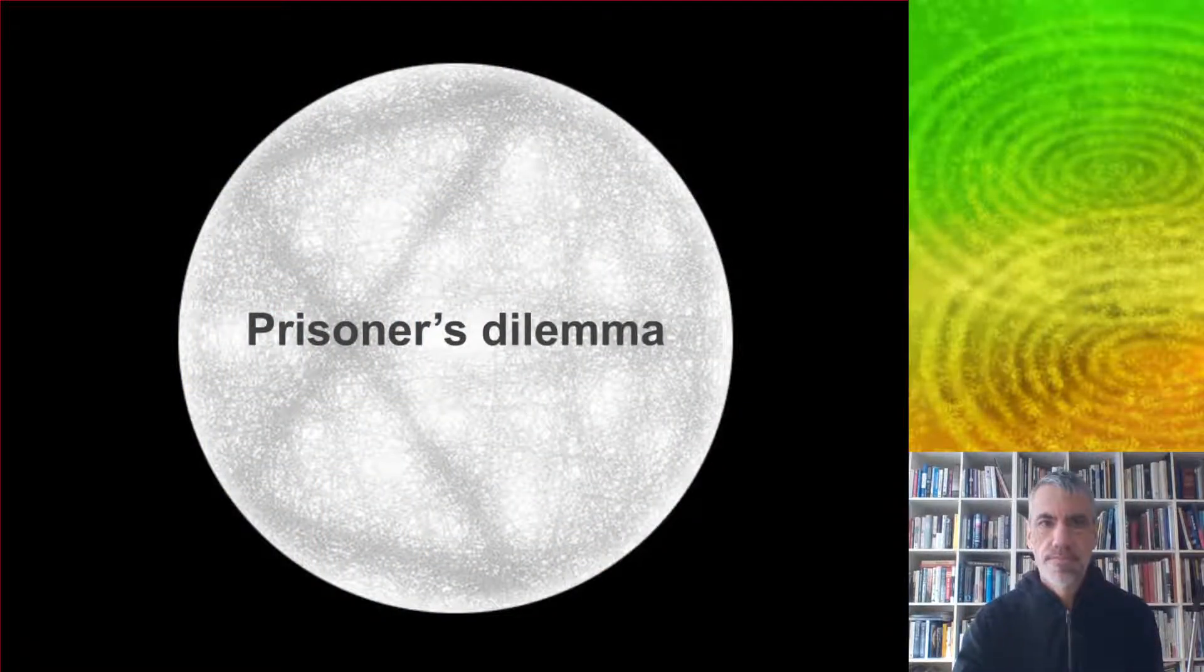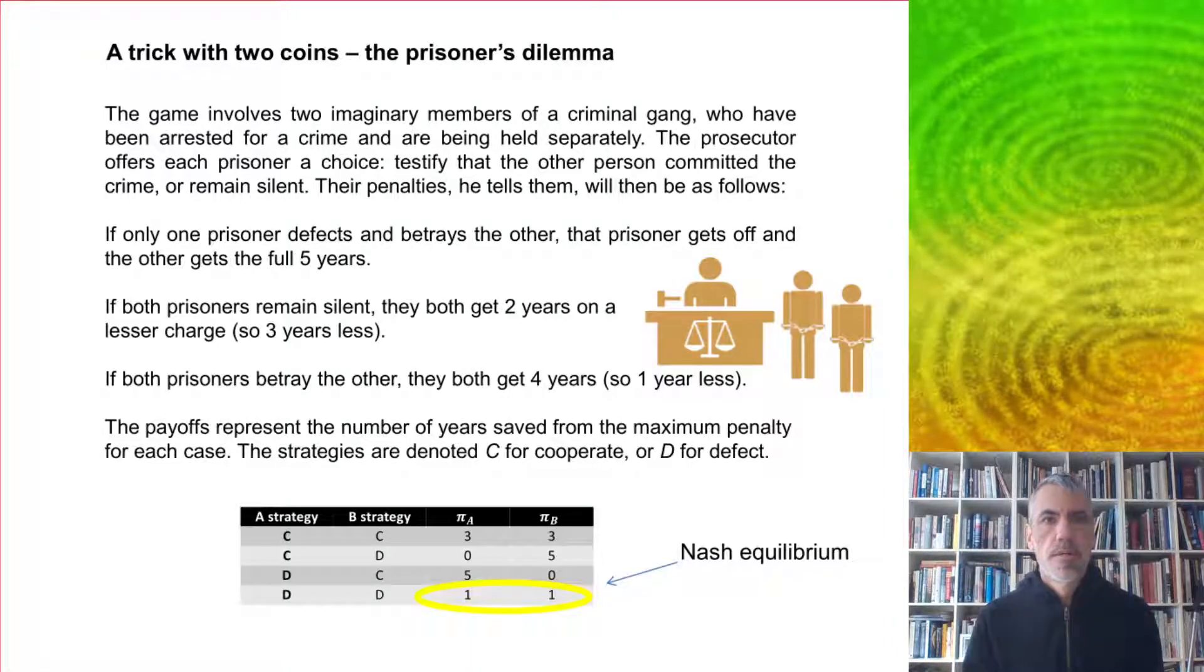One game from game theory which has applications to economics is the Prisoner's Dilemma. This game involves two imaginary members of a criminal gang. They've been arrested for a crime and are being held separately, and the prosecutor offers each prisoner a choice.